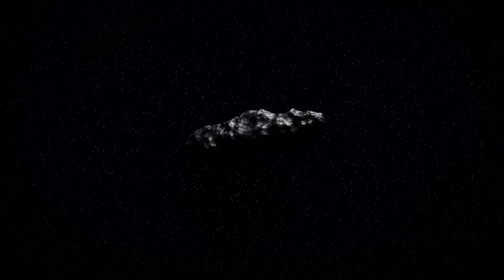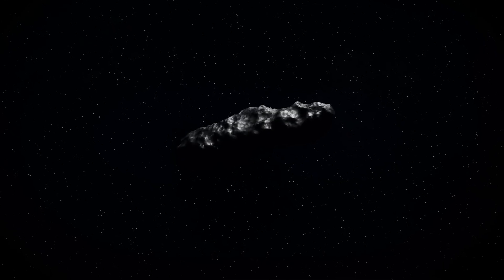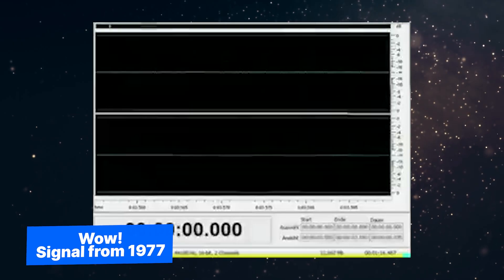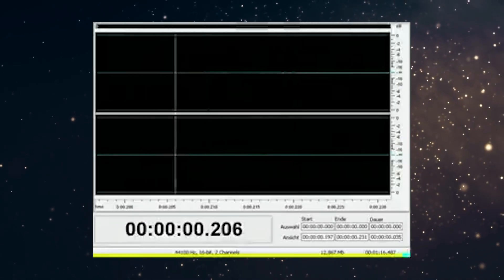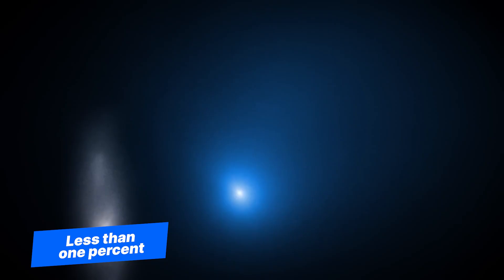And get this. It came from almost the exact same spot in the sky as the famous WOW signal from 1977. This radio signal that everyone thought might be aliens trying to contact us. The chances of that alignment? Less than one percent.